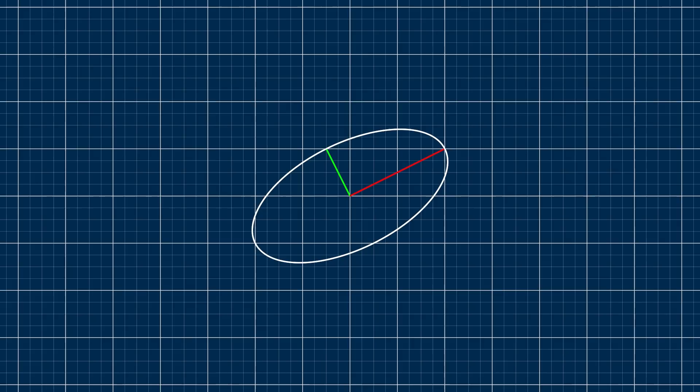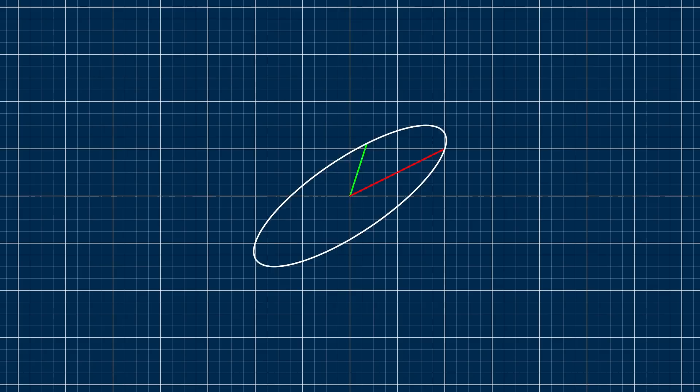But back to the ellipse. We haven't made any assumption about A and B being perpendicular. So what happens if they're just any skew vectors? It's still an ellipse, which means there's not a unique way to represent an ellipse in this vector notation.